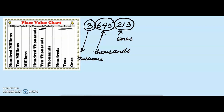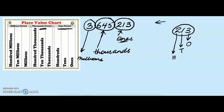Once we can read any 3-digit number, we can read all numbers. Let us pull out the ones period from this number. The ones period has the digits 2, 1, and 3. Remember, periods are different from place value. So within this ones period, my 3 has the place value of 1s, my 1 has the place value of 10s, and my 2 has the place value of 100s. So to read this period, it is going to be 213.